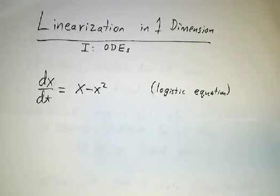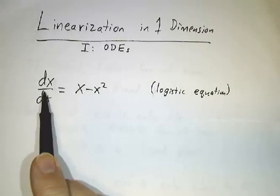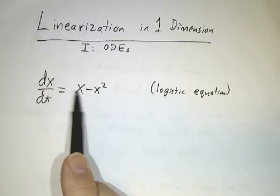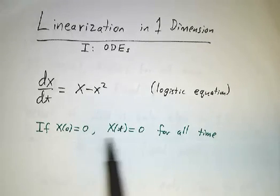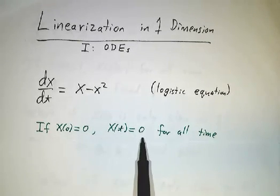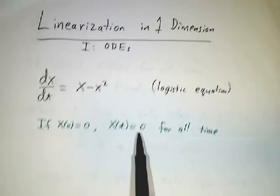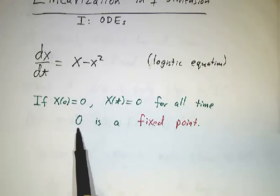You'll notice that if x starts off at 0, if x is 0 then the derivative is 0, and x(t) being 0 for all time is a perfectly good solution. So we call 0 a fixed point. Any value that if you start there you stay there forever is called a fixed point.